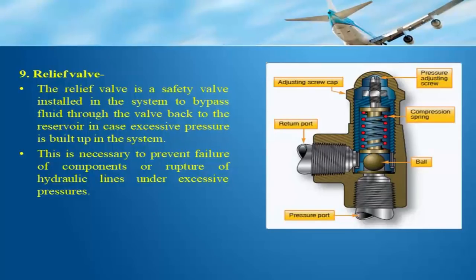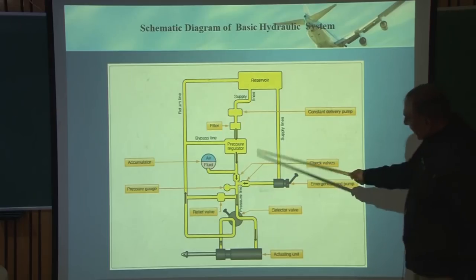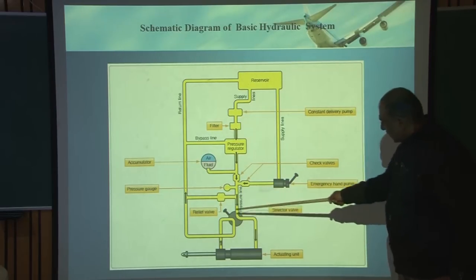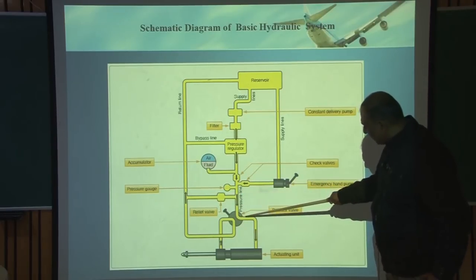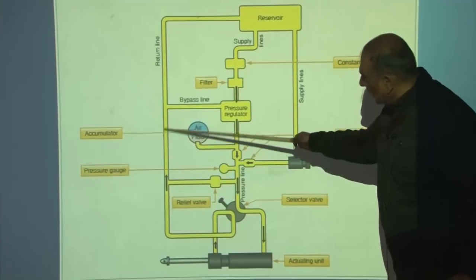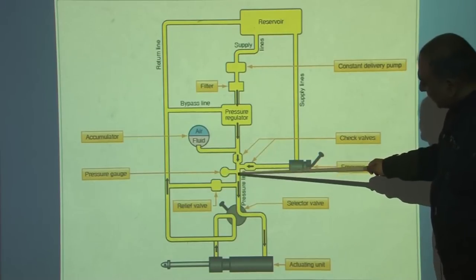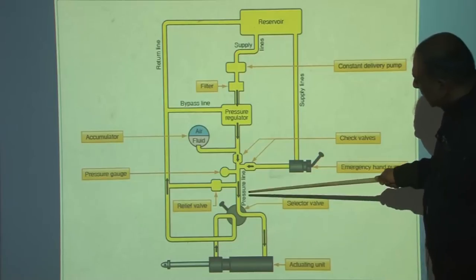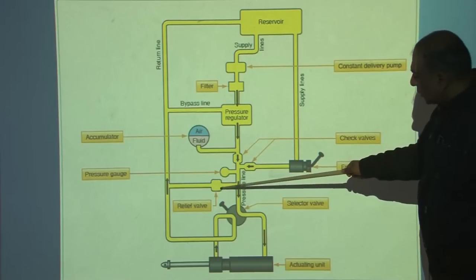The relief valve, also called a safety valve, is installed in the system to bypass fluid through the valve back to the reservoir in case excessive pressure is built up. This valve is necessary to prevent failure of components or rupture of hydraulic lines under excessive pressures. If there is excessive pressure in the line, the relief valve bypasses it via the return line back to the reservoir.